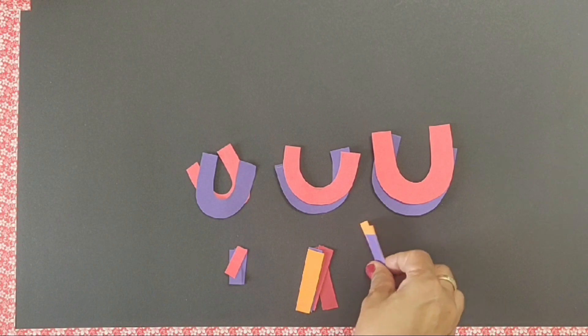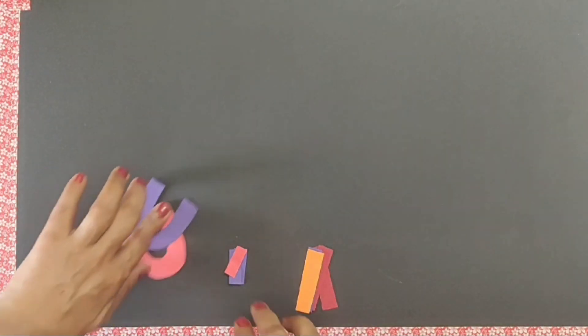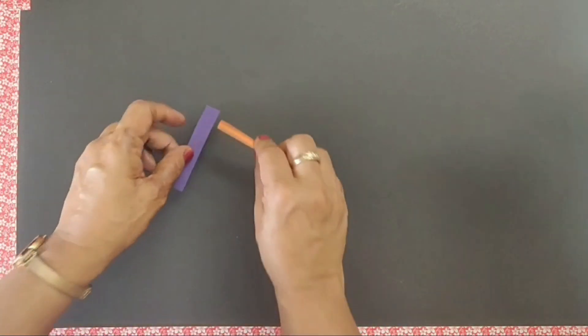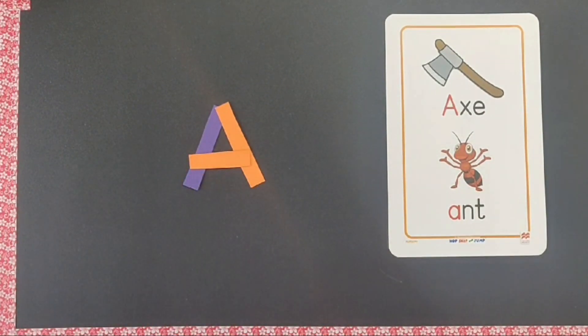So now let's start making the alphabets. Take two bigger strips and a smaller one. This makes A. Say A says ah, A for ax.